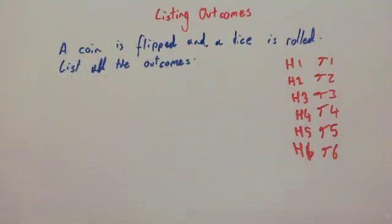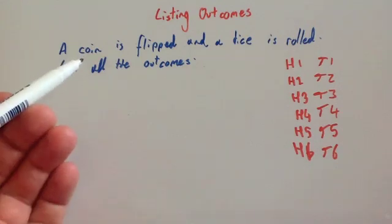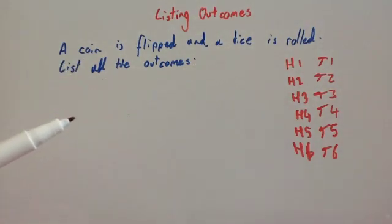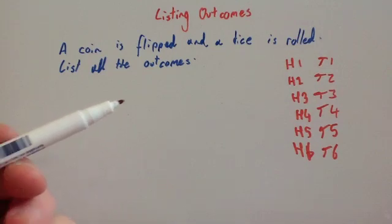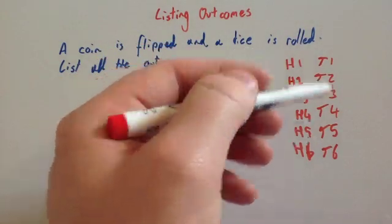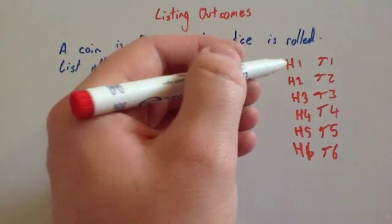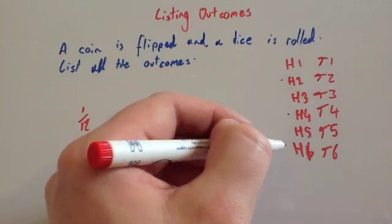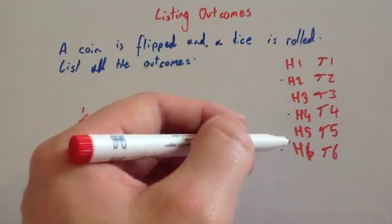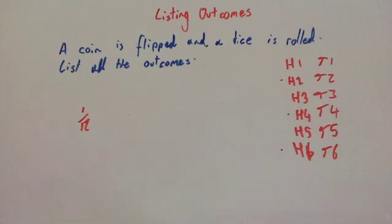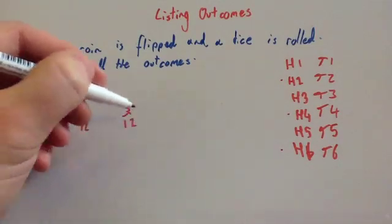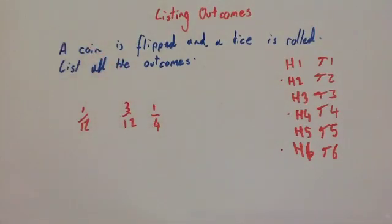Then you could answer questions on it. So they could ask you a probability question. What's the probability if a coin is flipped and a dice is rolled of getting a head and a one? So it would be one out of 12. So one twelfth. They could ask you what's the probability of getting a head and an even number? So it would be head two, head four, or head six. So it would be three out of 12 and so on. And you can cancel that down to one quarter. So you can answer lots of different questions once you've listed the outcomes.